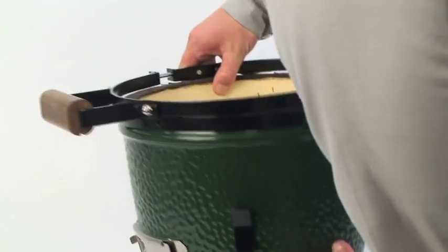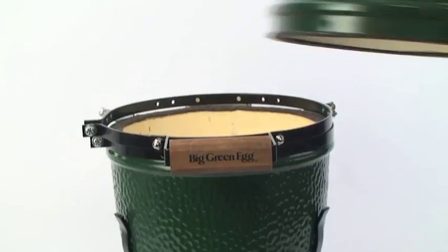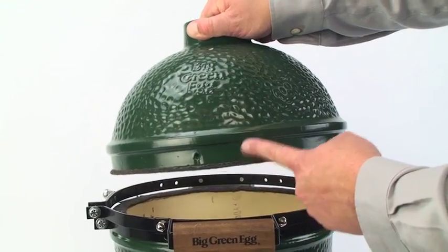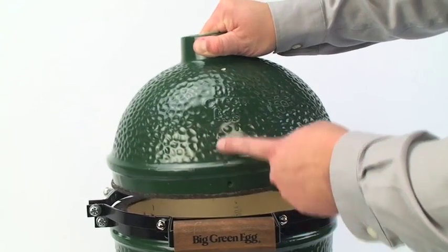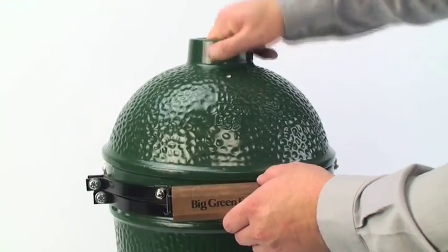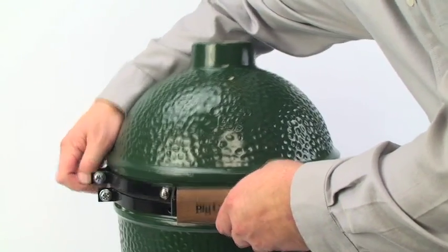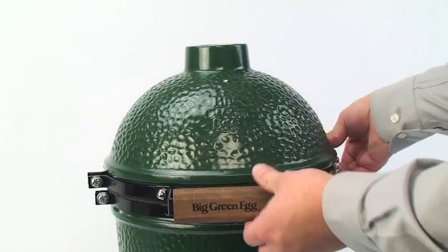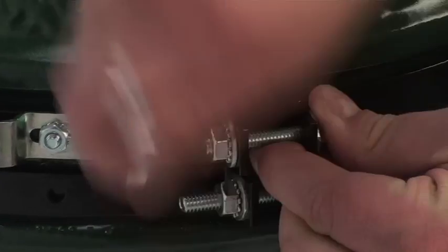For this next step, please turn the egg around so the draft door is directly in front of you. Carefully lifting the ceramic dome and placing it on top of the base, make sure the upper band fits around the lip of the dome and center the temperature gauge hole, the Big Green Egg logo, and alignment hole with the center of the handle on the upper band. Now tighten the hex head bolt on the upper band.